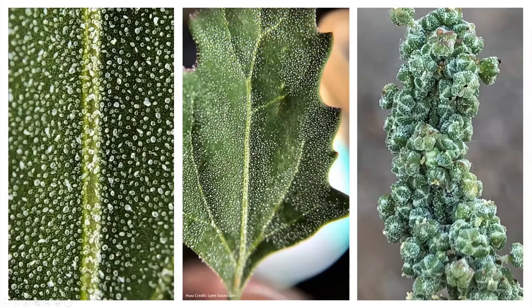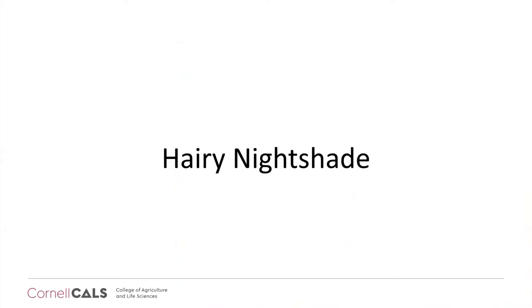Here's another picture of a common lambsquarters plant showing a leaf and the inflorescence. Again, that grainy texture on the surface is simply trichomes — little leaf hairs.